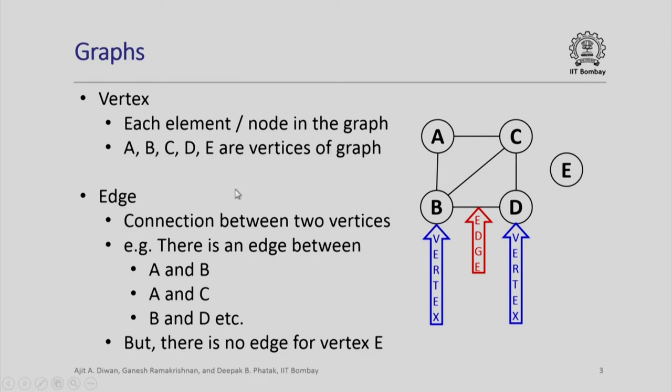Let us look at representation of graphs. Any graph consists of a set of vertices and a set of edges. A vertex is merely an element or a node in the graph. For example, in this illustration, A, B, C, D, E are all vertices of the graph.